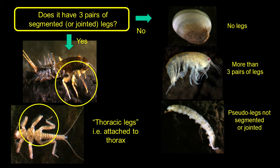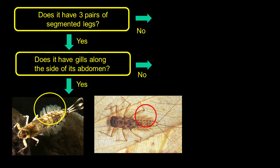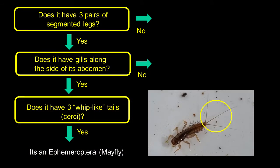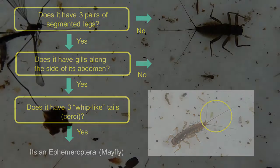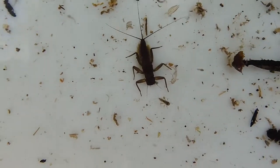What we're going to do now is work our way through the flow charts here, which hopefully will get us to the different types of orders relatively easily. The first question we ask is: does the organism we have in front of us have three segmented or jointed legs? If the answer is yes, then we're talking about some sort of insect. The next question is: are there gills along the side of the abdomen? If yes, then we look at the tail — what we call the cerci. If it has three whip-like tails, then what you've got in front of you is almost certainly a mayfly, an Ephemeroptera. Be aware that some specimens may be damaged, so you might have to look and say, well, I think it should have three tails.